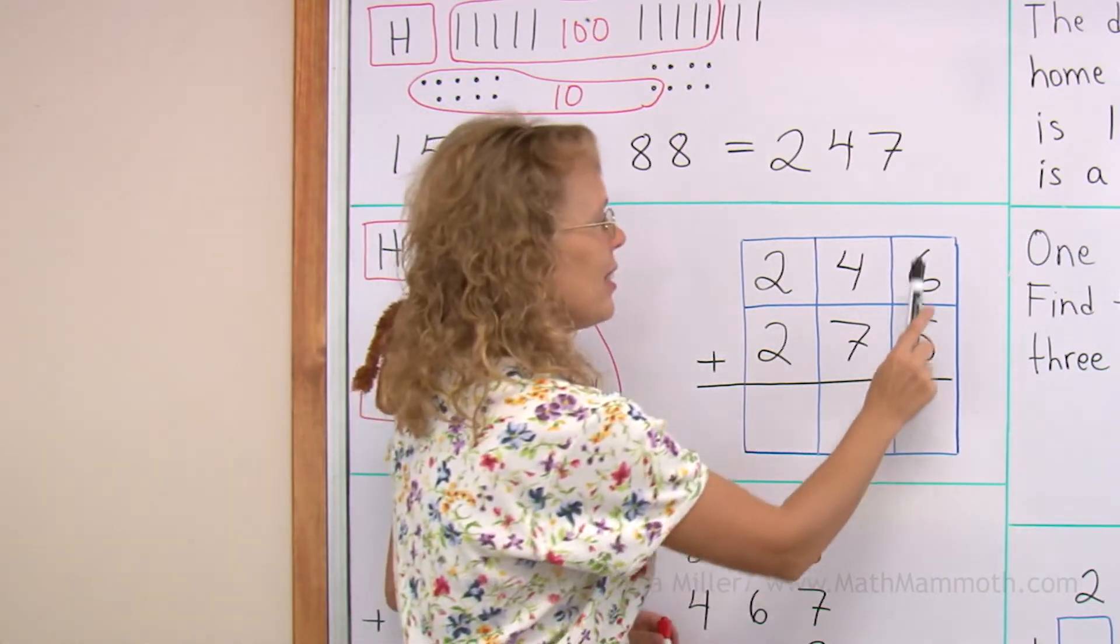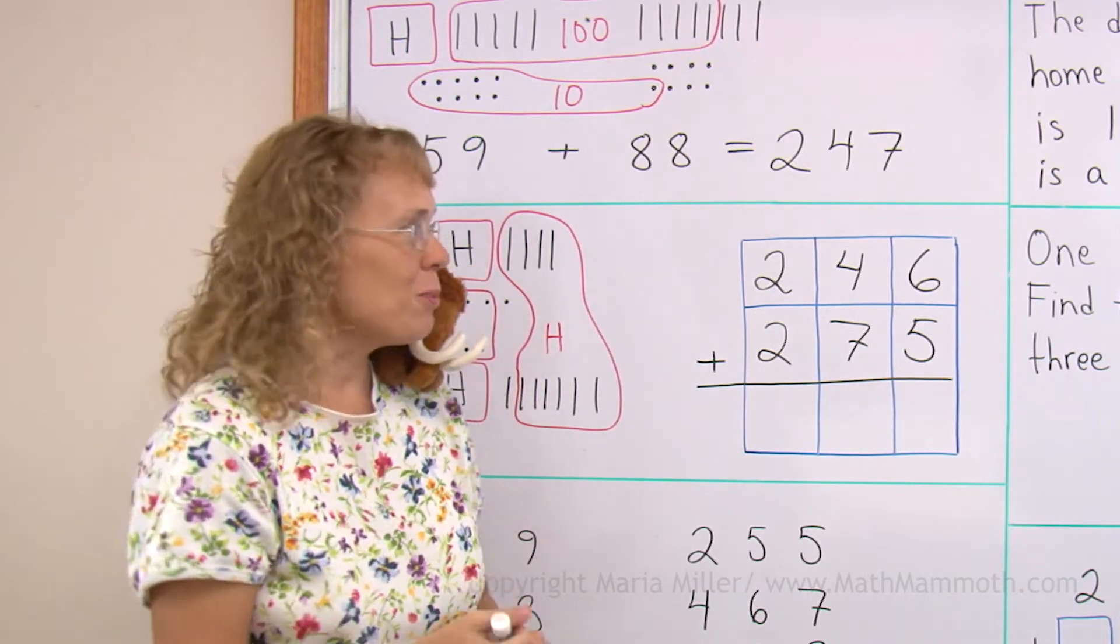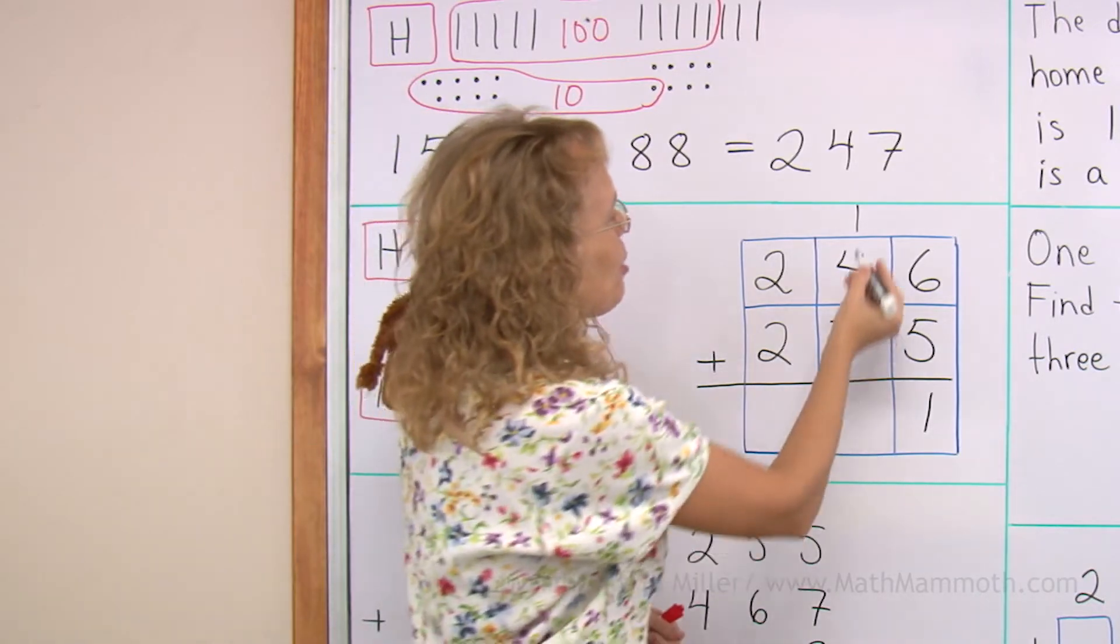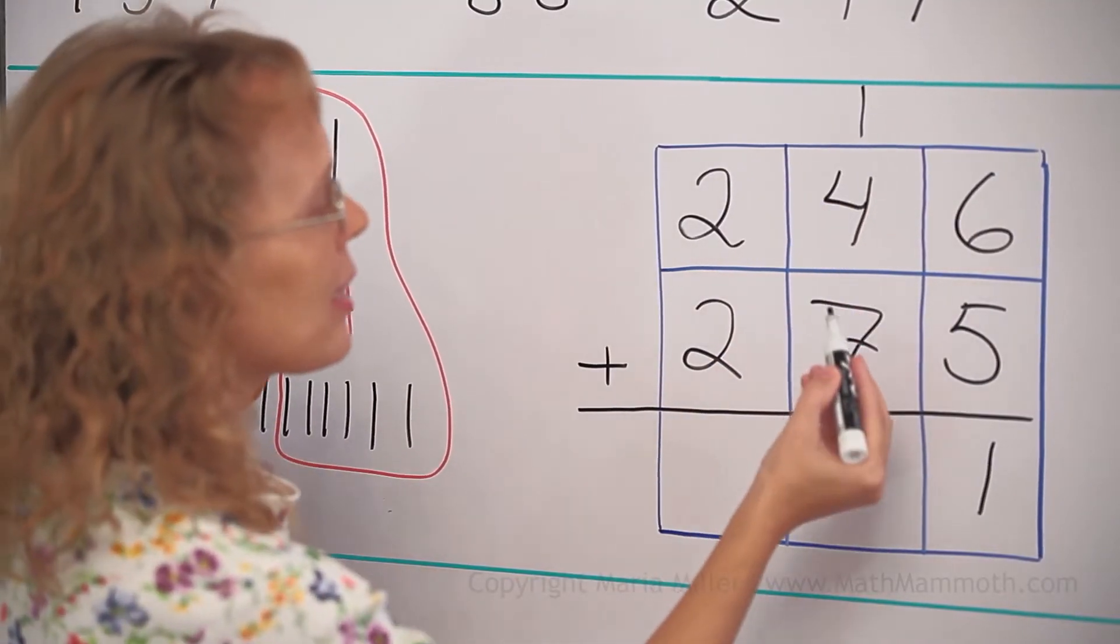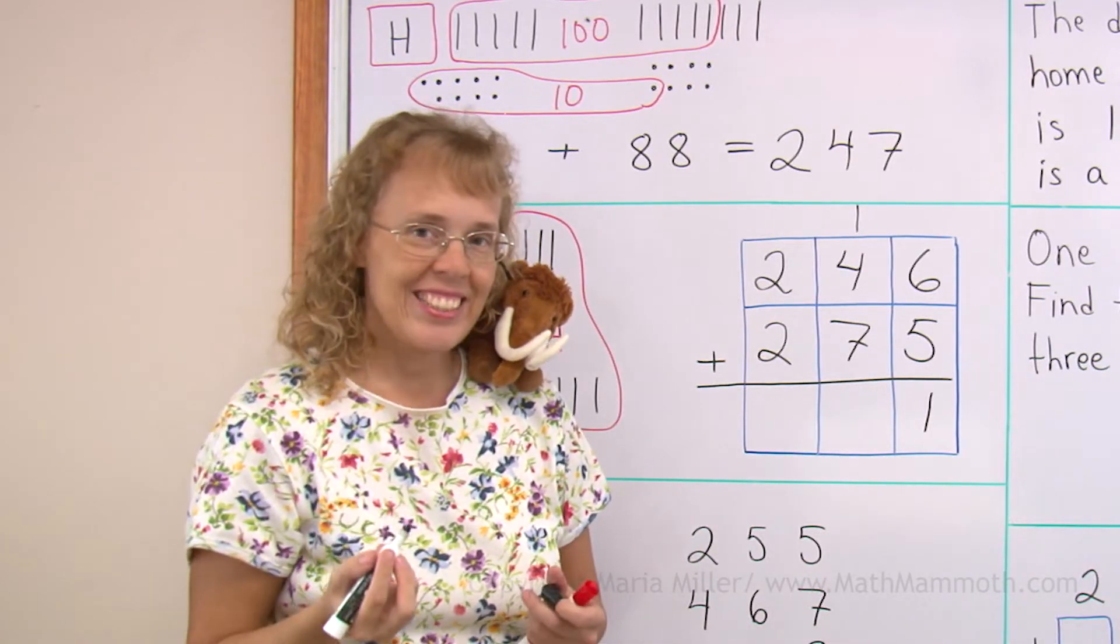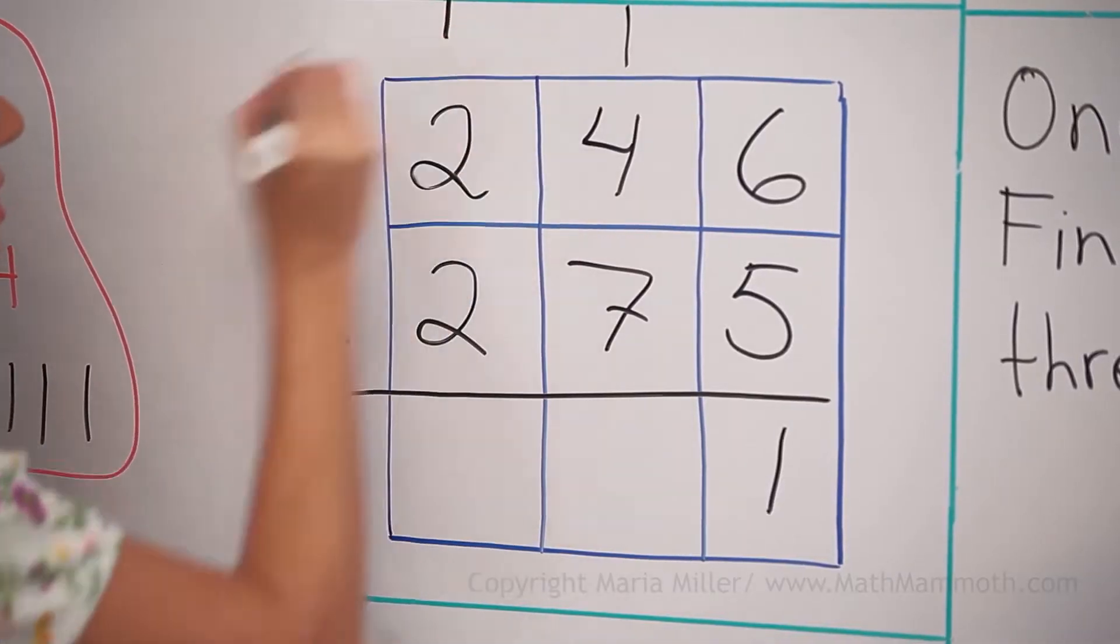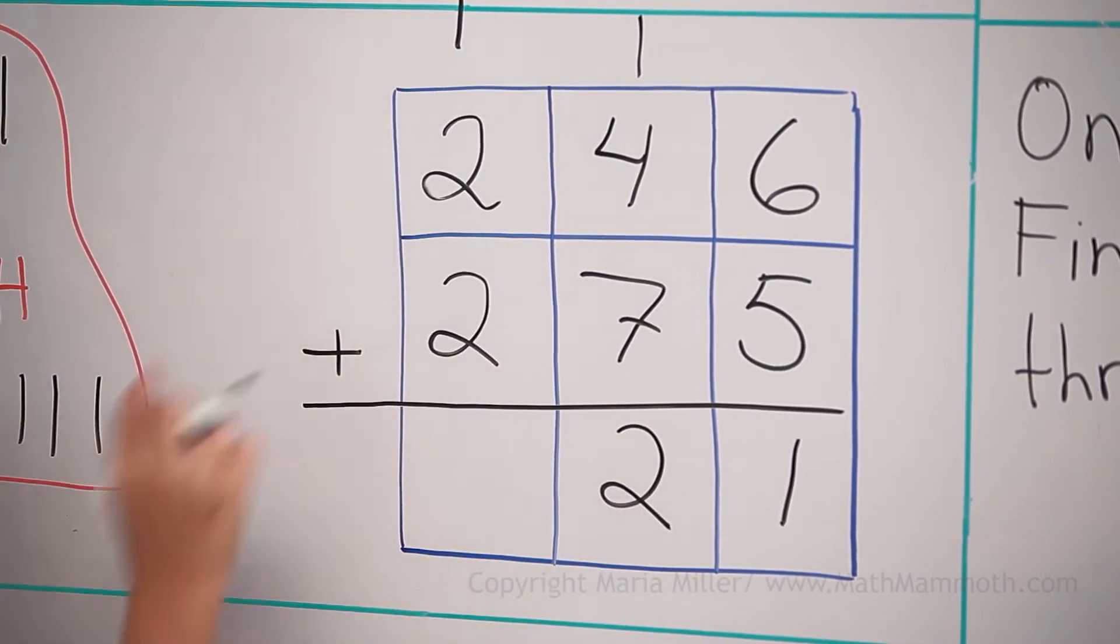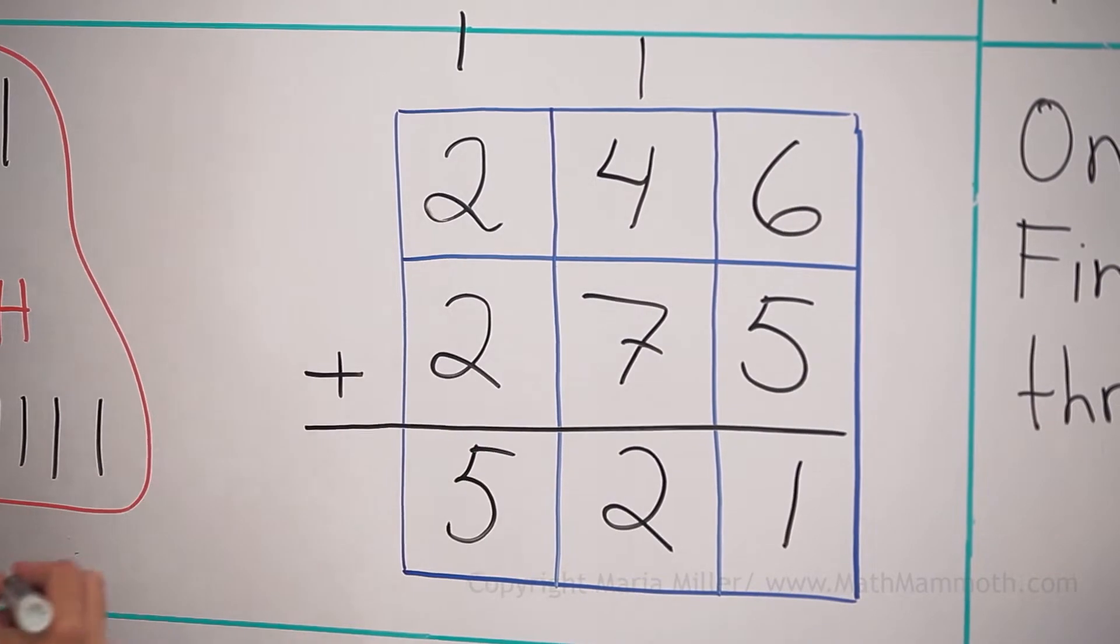And it can look a little confusing maybe, but actually it is easier here. When we are adding the ones, 6 plus 5 equals 11. So we regroup. There's one 10 here and one here. And now we are adding in the 10s. So we get 1 plus 4 plus 7. That makes 12. So we get 12 10s, which is more than 10 10s. So the 10 10s make 100. And then two 10s here. So it is like 12, 1 and 2. And then we add the 100s and get 521.